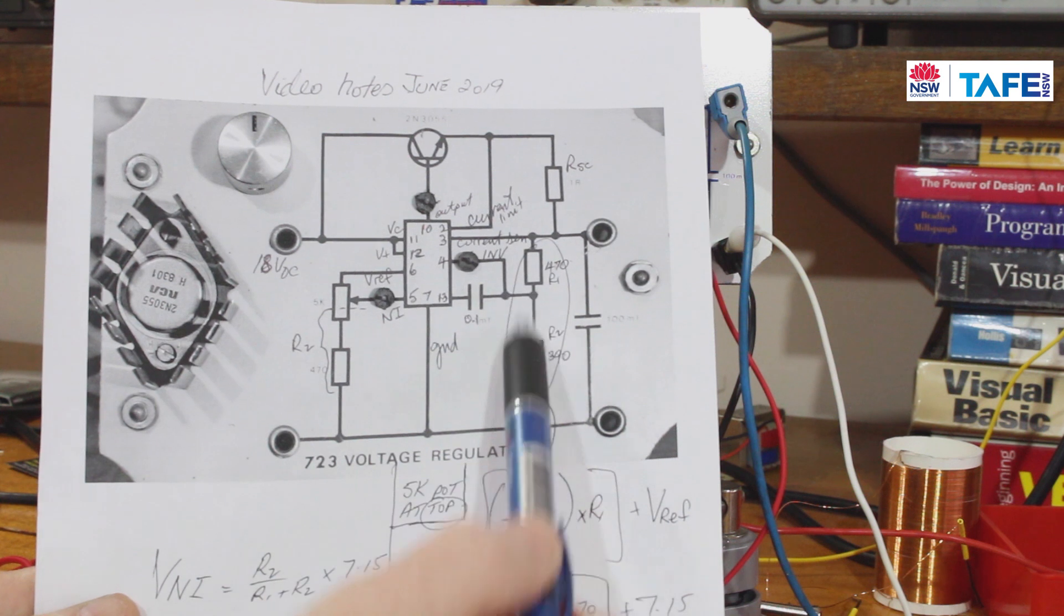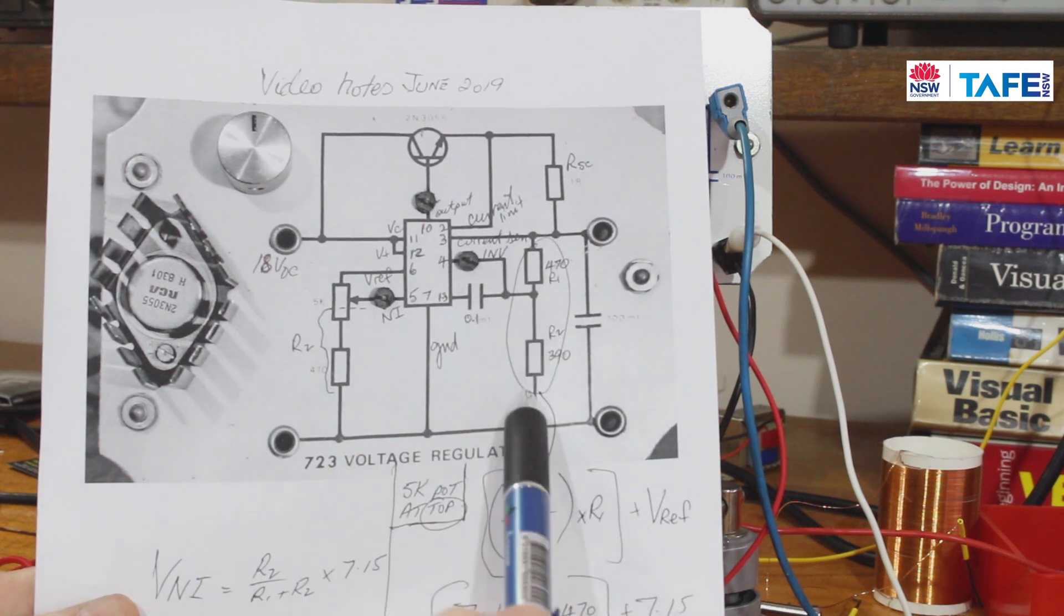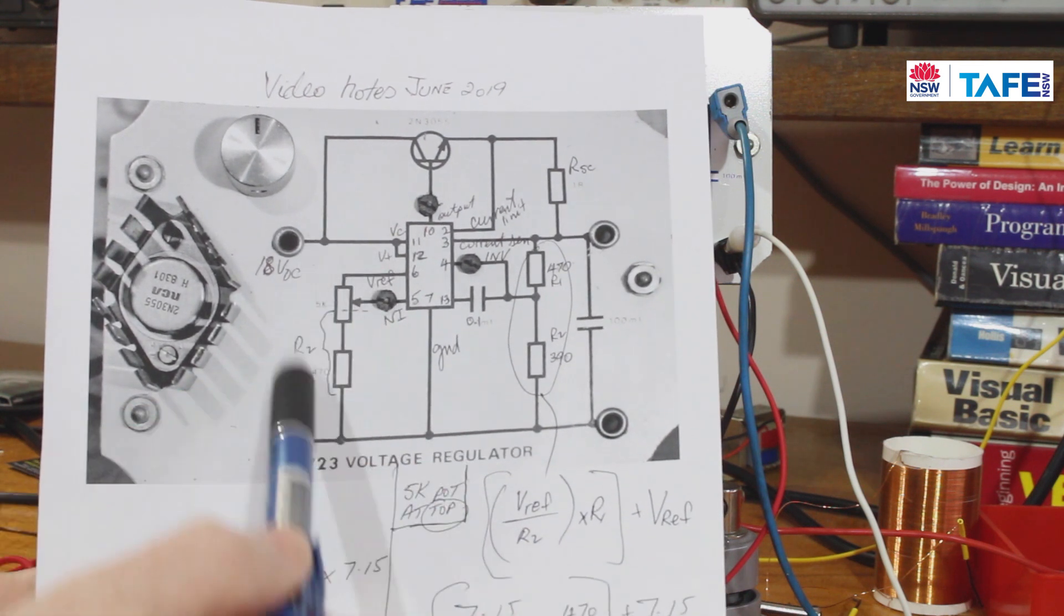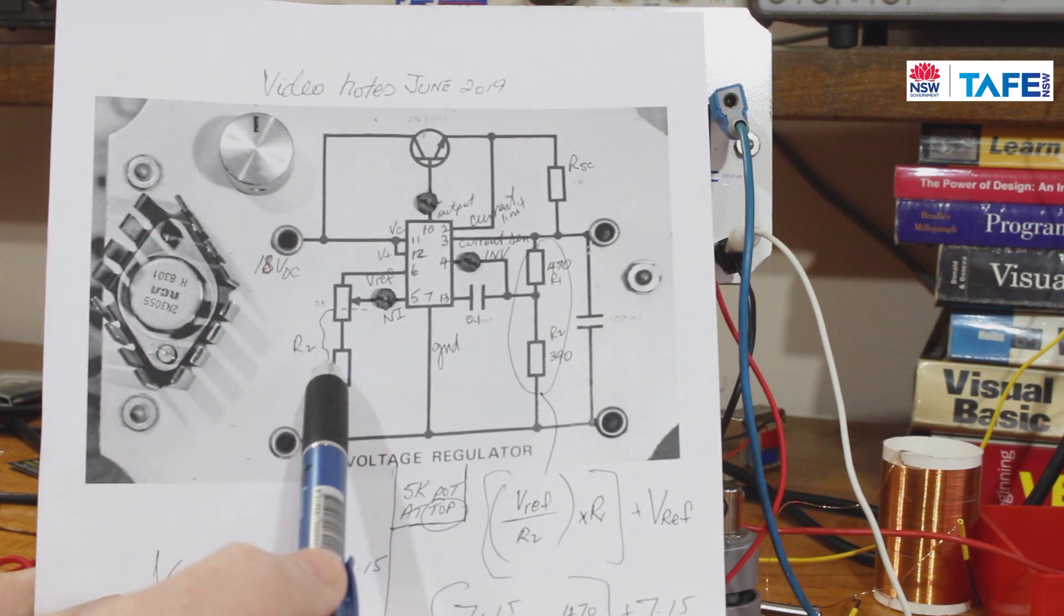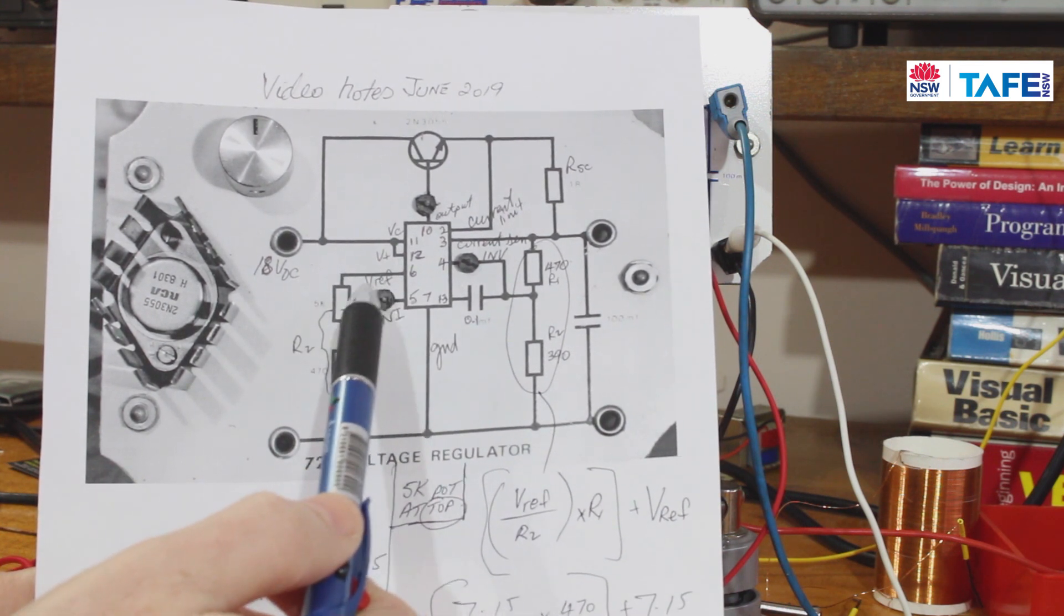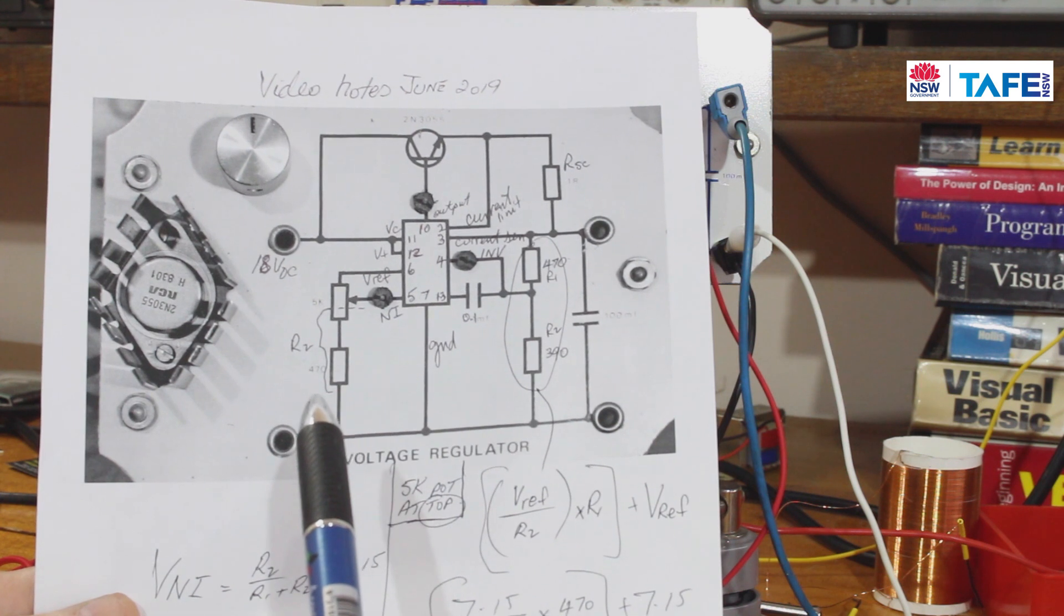Now the right-hand side sets the high output voltage from this regulator. The left-hand side is a way of varying the voltage reference, which is nominally 7.15 volts for a 723.